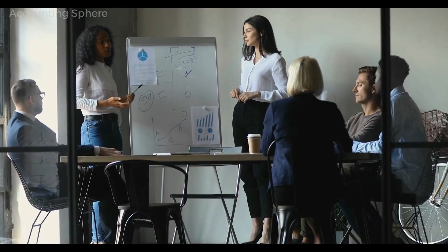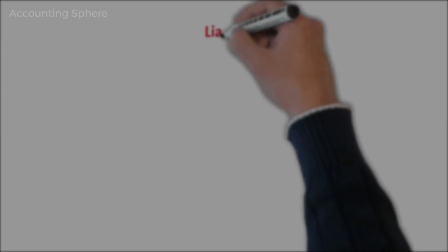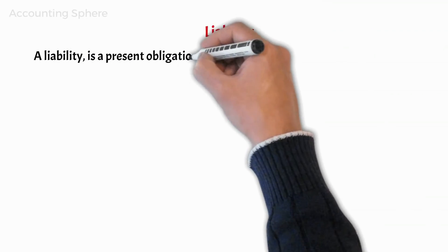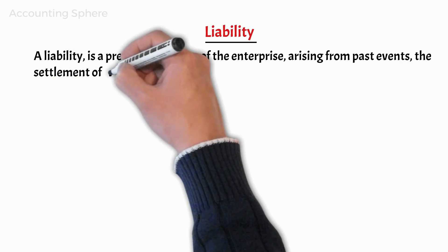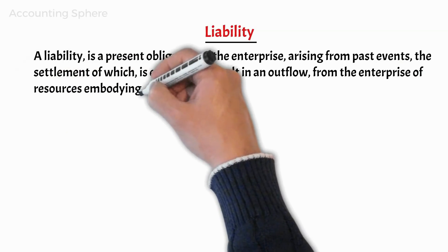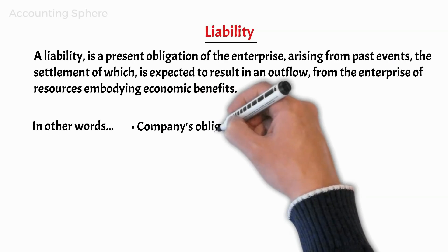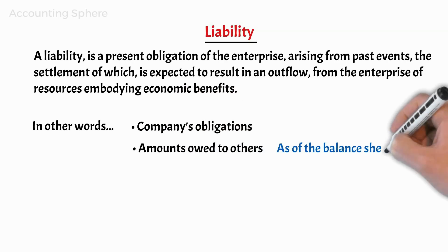According to the framework of the International Financial Reporting Standards, known as IFRS, a liability is a present obligation of the enterprise arising from past events, the settlement of which is expected to result in an outflow from the enterprise of resources embodying economic benefits. So we can say that liabilities are the company's obligations and are amounts owed to others as of the balance sheet date.